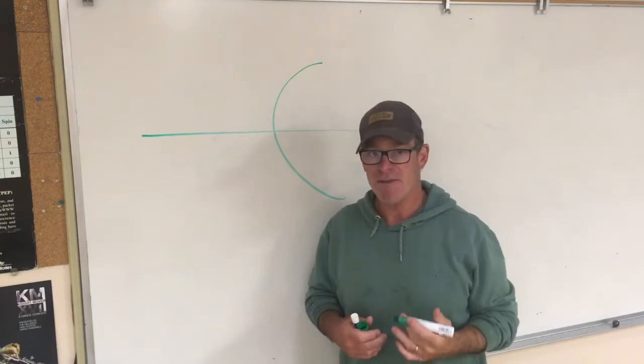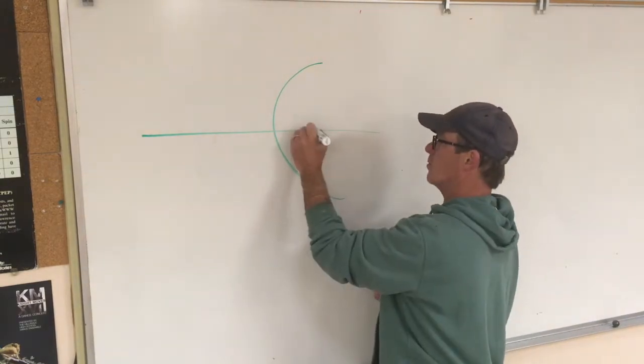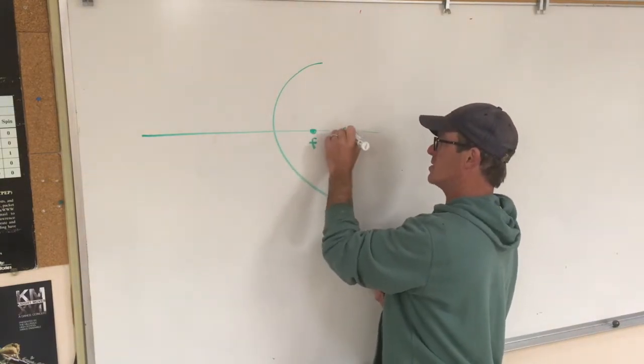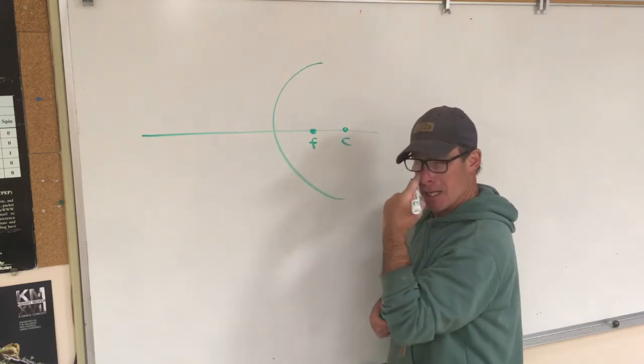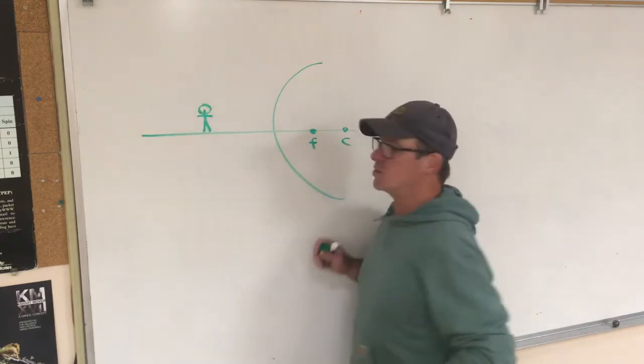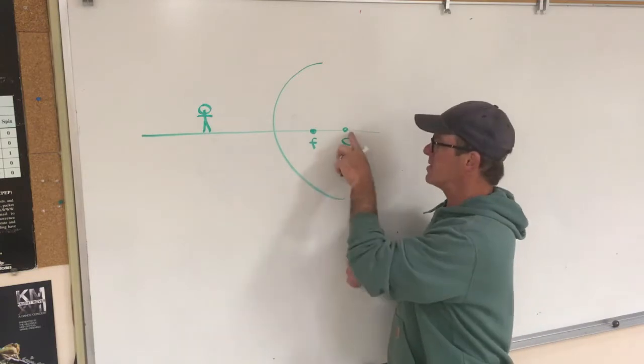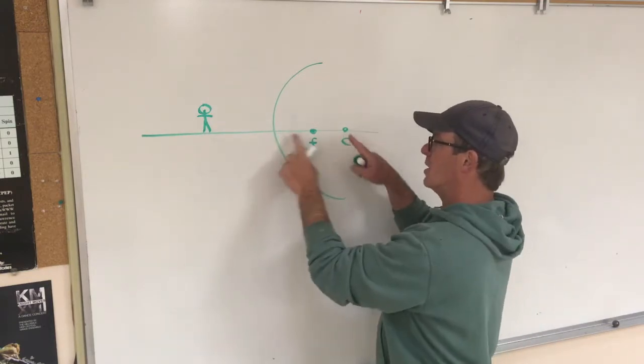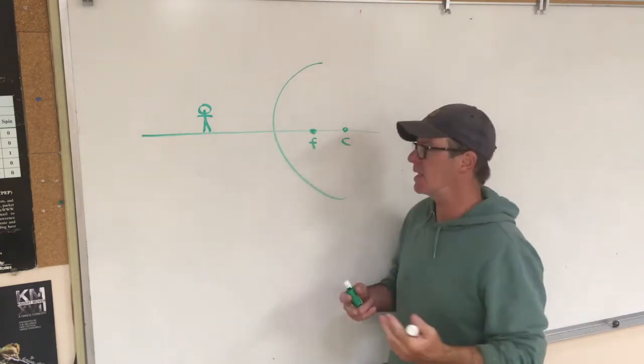A convex mirror is one which the focus is on the non-shiny side of the mirror. This is the radius of curvature and that's half of that distance there.